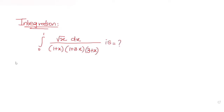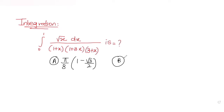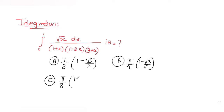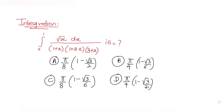The answer choices are: (A) π/8 · (1 − √3/2), (B) π/4 · (1 − √3/6), (C) π/8 · (1 − √3/6), and (D) π/4 · (1 − √3/2). We need to figure out which one is the correct answer.